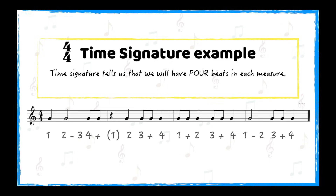Clapping will sound like this: 1, 2, 3-and-4. Let's try it together. 1, 2, 3, 4-and. 1, 2, 3-and-4. 1-and-2, 3-and-4. 1, 2, 3-and-4.